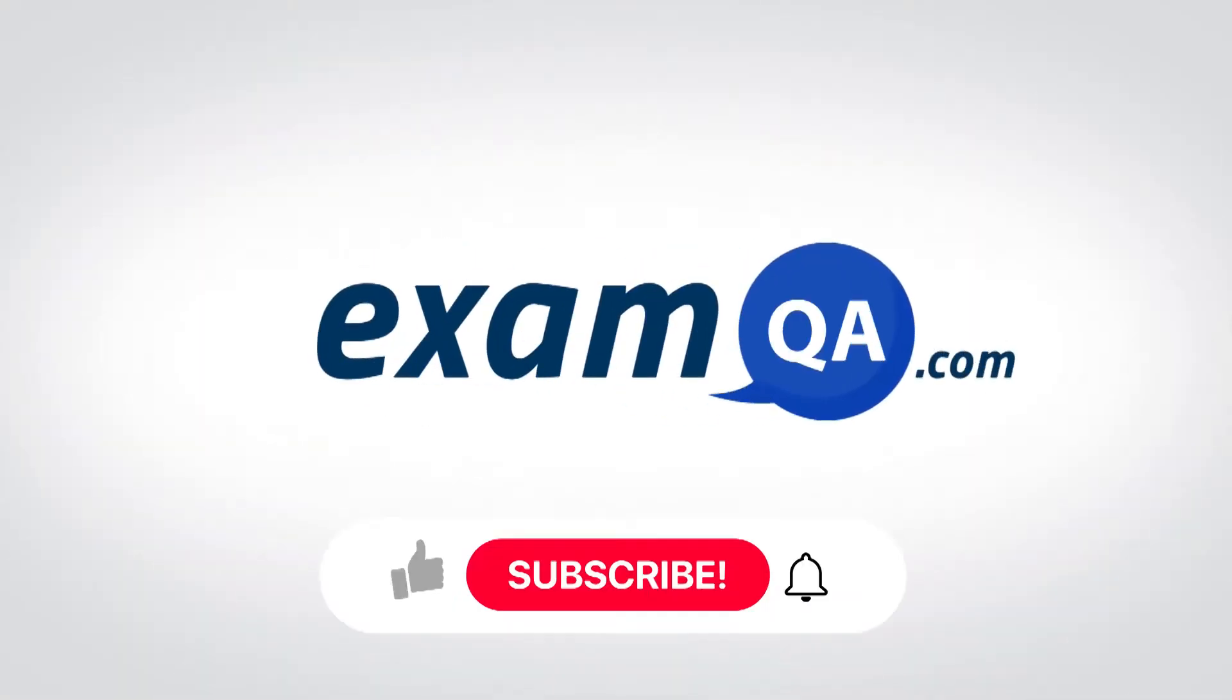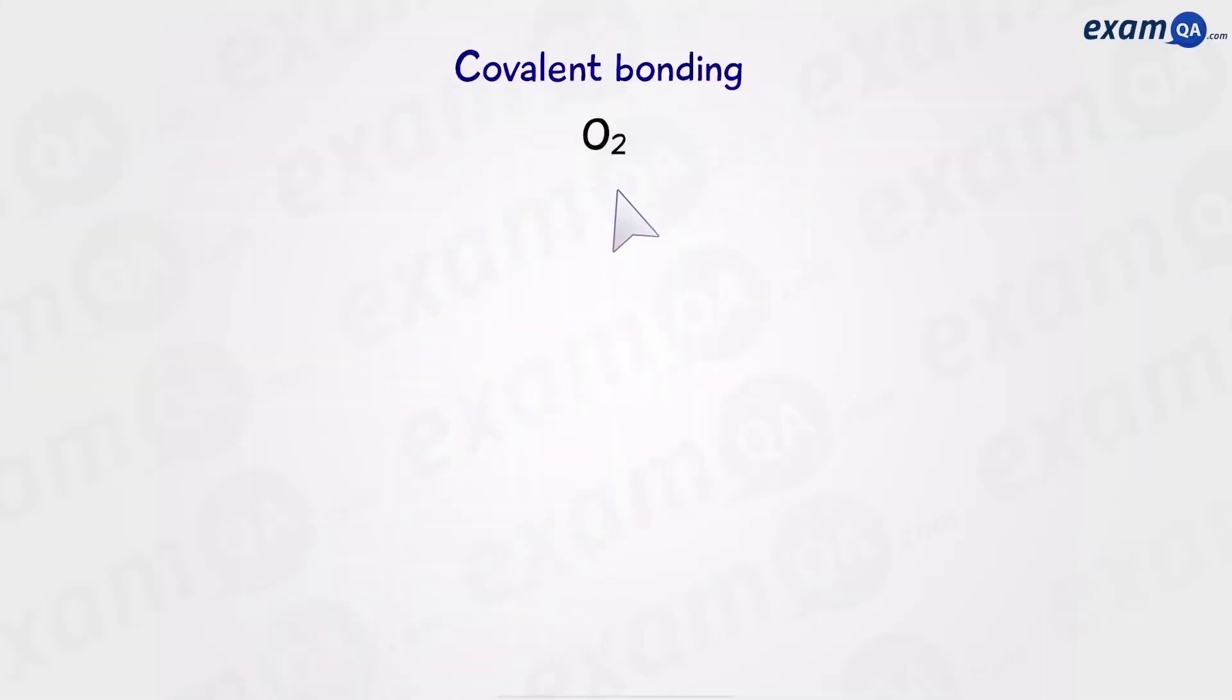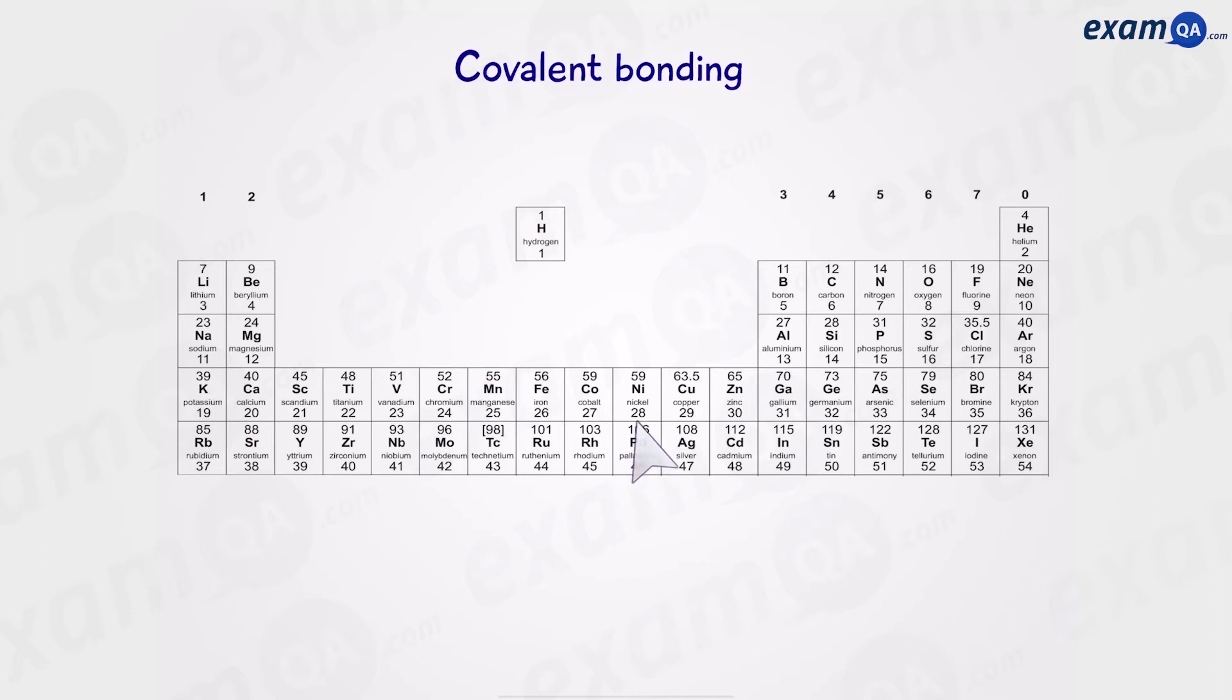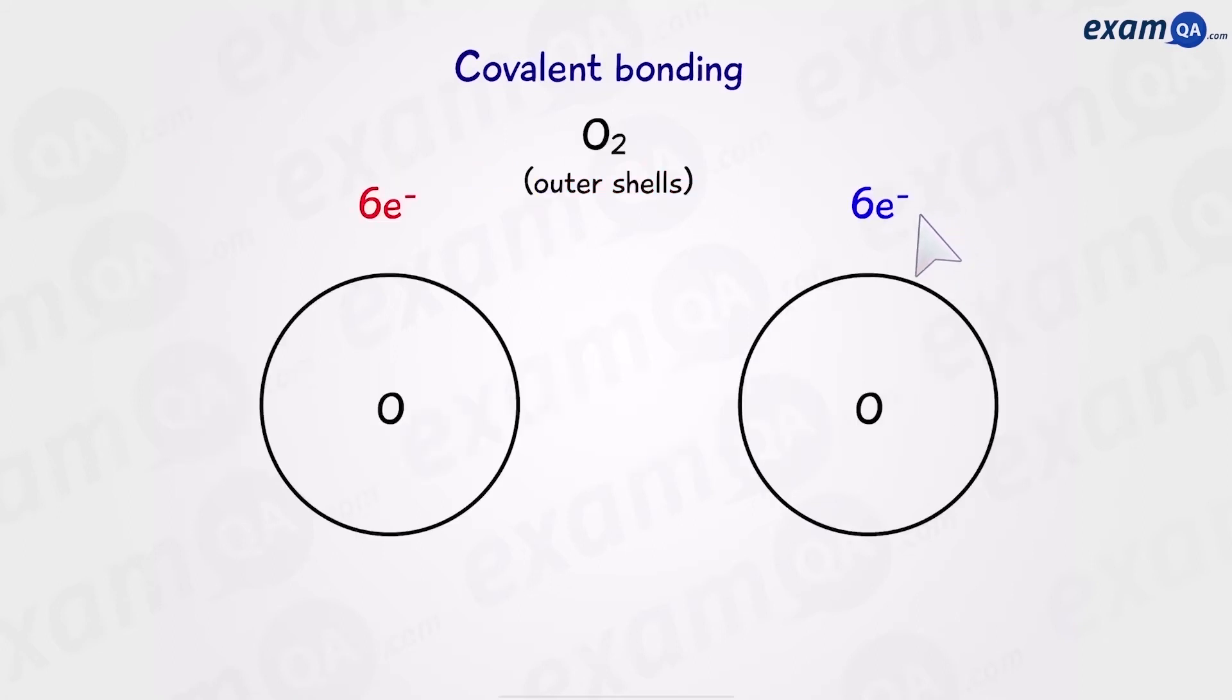Let's try another example. Let's see if we can draw oxygen. Remember, we're only drawing outer shells. So in O2, we're going to need two oxygen atoms. Now how many electrons go on the outer shell of an oxygen atom? To know that, we have to look at the periodic table. These numbers are the group numbers. And they can tell you something very important. The group numbers tell you how many electrons are in the outer shell of an element. For example, oxygen is in group six. That means it's going to have six electrons in its outer shell.